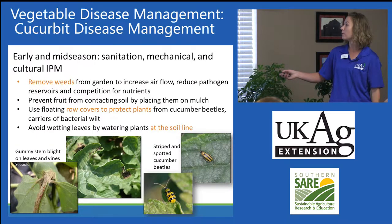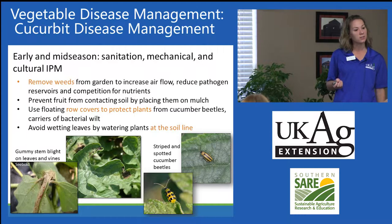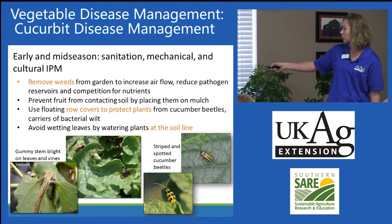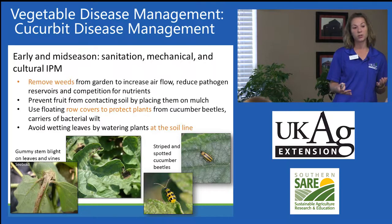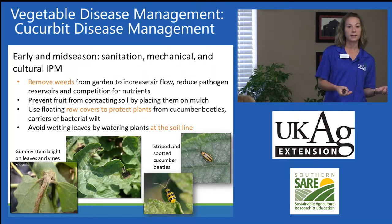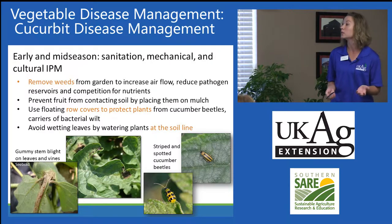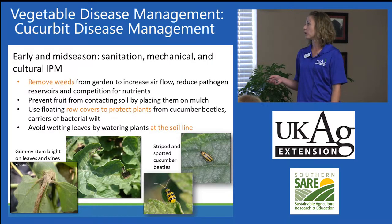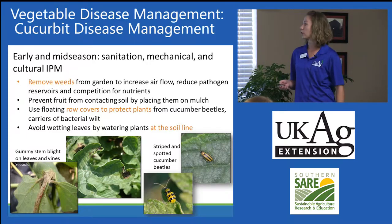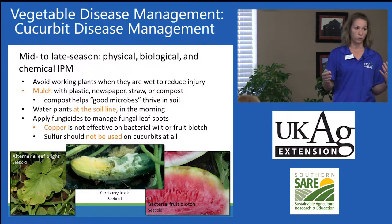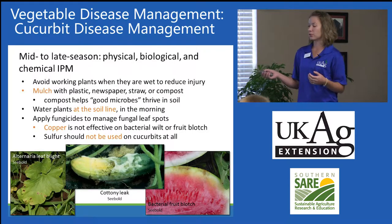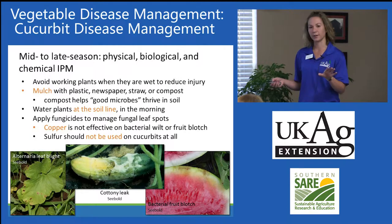Continuing in mid-season: manage weeds, prevent fruit from contacting the soil by placing them on top of the mulch. Row covers are really important to reduce the incidence of bacterial wilt, which is vectored by striped and spotted cucumber beetles — that pathogen overwinters within the beetles. Gardens with heavy cucumber beetle pressure are more likely to have issues with bacterial wilt. Also avoid wetting leaves by watering at the soil line, and avoid working plants when they're wet, as that introduces more injuries.